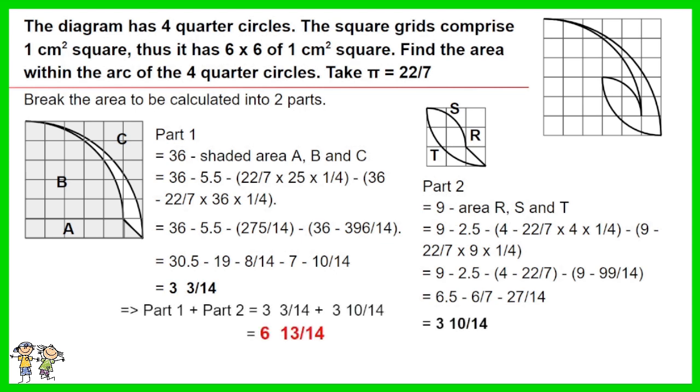Part 1 plus part 2 is 3 and 3 over 14 plus 3 and 10 over 14. The answer is 6 and 13 over 14.